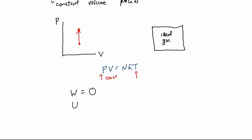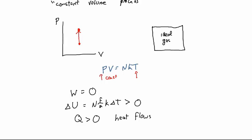What's the change in internal energy during a constant volume process? The pressure is increasing, which means the temperature is increasing, and since internal energy for an ideal gas is related to temperature, the internal energy increases. The work done is zero, so the energy must be coming from heat flowing into the system — which fits: to increase the pressure in a sealed container, you heat up the gas.